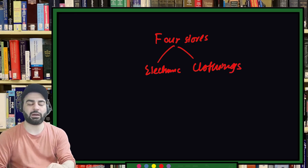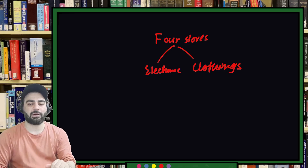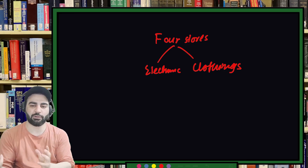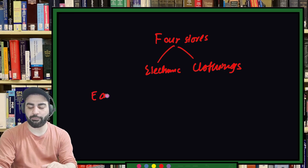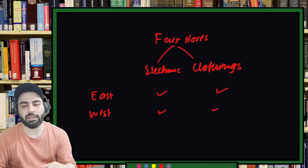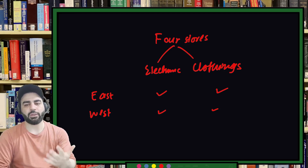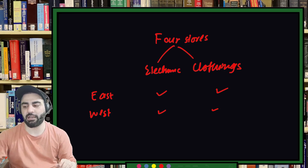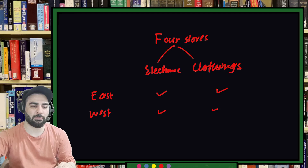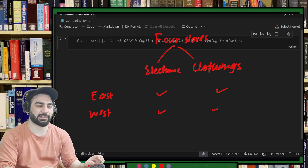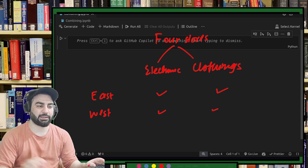The placement is east and west — some area is called east and some area called west. In east you have one electronic store and one clothing store, and similarly in west. You basically want to see the sales in January, February, and March. We will create a dataset to show a real-world example where we can use multilevel indexing.